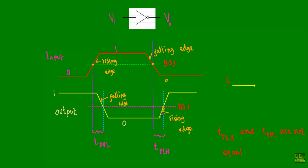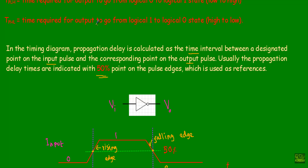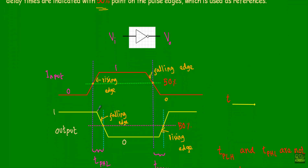The 50% point of the output transition from logic 0 to logic 1 is the rising edge reference, and the 50% point of the transition from logic 1 to logic 0 is the falling edge reference. TPHL is the time required for the output to go from logical 1 to logical 0 — from high to low state. TPHL is the time interval between the 50% level on the input pulse and the 50% level on the output pulse when the output is changing from logical 1 to logical 0.